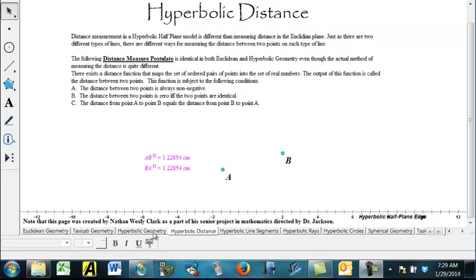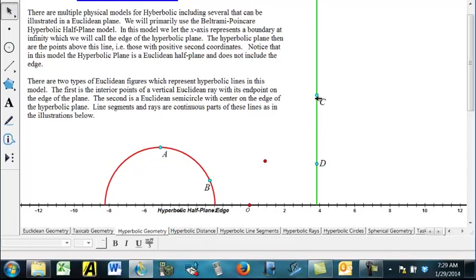So remember that we have two different kinds of lines. We have lines that are, Euclidean-wise, vertical rays without their endpoints going up from the perpendicular to the edge.